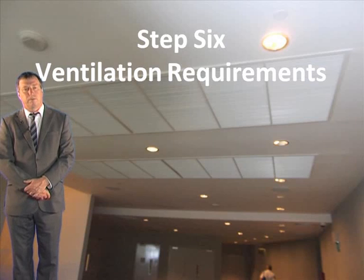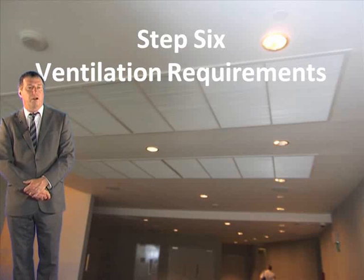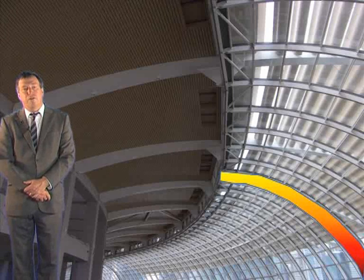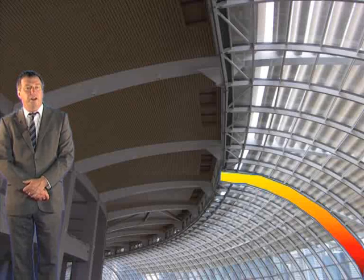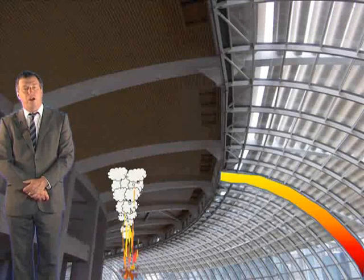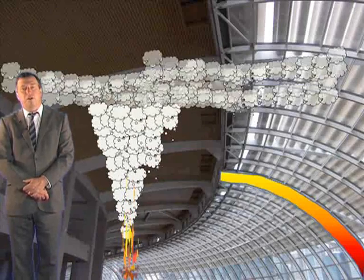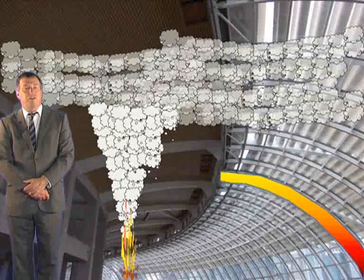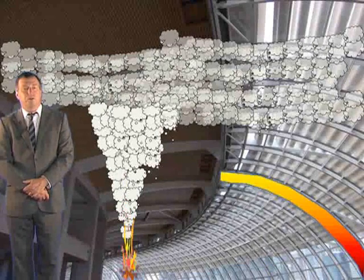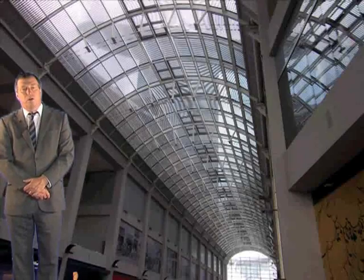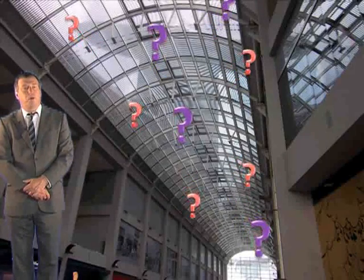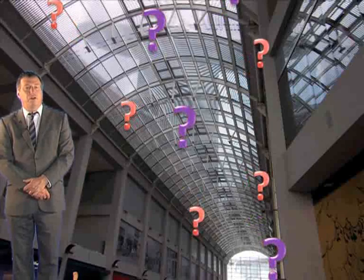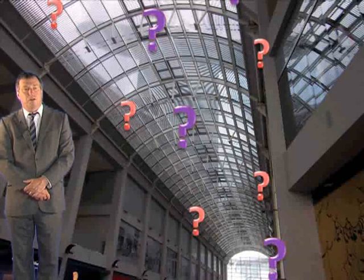We'll look at ventilation requirements, starting with the number of reservoirs that might be required. A large building will normally have a number of separate smoke reservoirs within it, and one objective of any smoke control system is to ensure that smoke from a fire only affects a single reservoir. This is so that damage is limited in extent, people are put to minimal risk, and the smoke exhaust system functions correctly. We'll examine how many reservoirs might be required, but first we'll look at some of the principles behind smoke reservoirs.